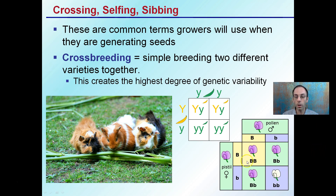Looking at our Punnett square, we have two purple flowers, both heterozygotes, meaning they both contain a recessive gene. When we breed these together, we get 75%, or three out of four phenotypes, being purple, and one with a white phenotype. Looking at genotypes: one out of four will be homozygous dominant, one out of four will be homozygous recessive, and two will be heterozygotes. The homozygous dominant will always produce the purple trait, and if bred with another homozygous dominant, all offspring will be pure breeding. The same goes for the pure breeding white — homozygous recessive.